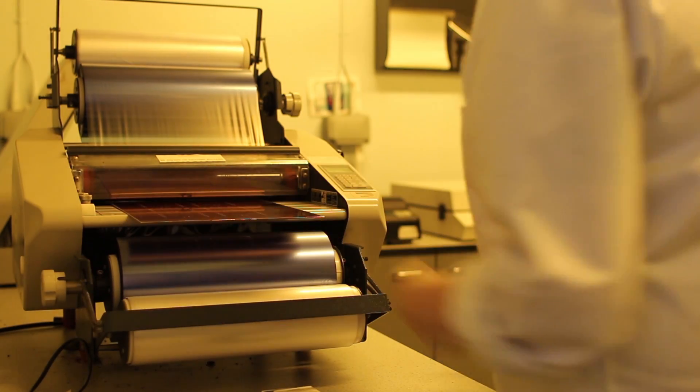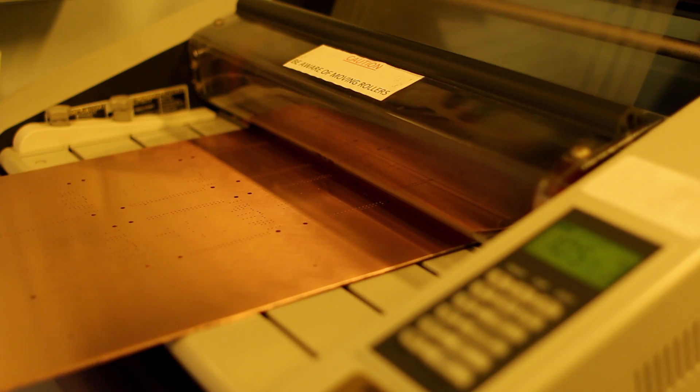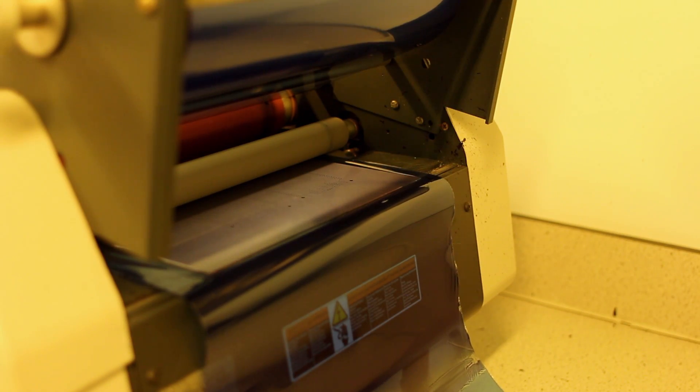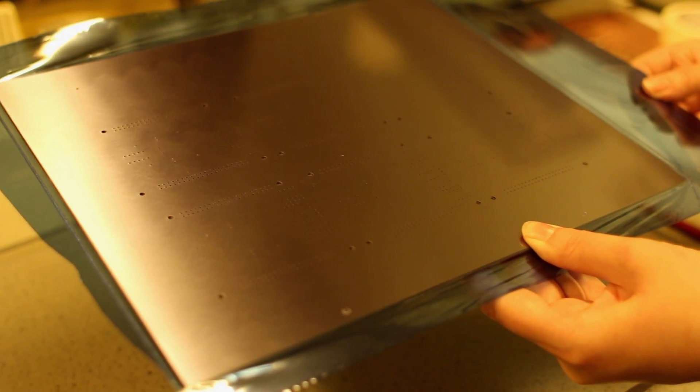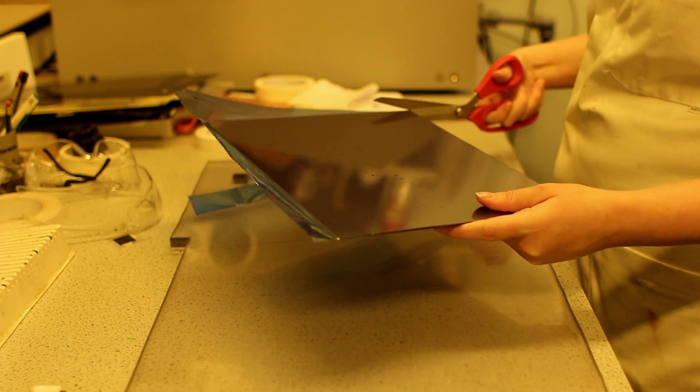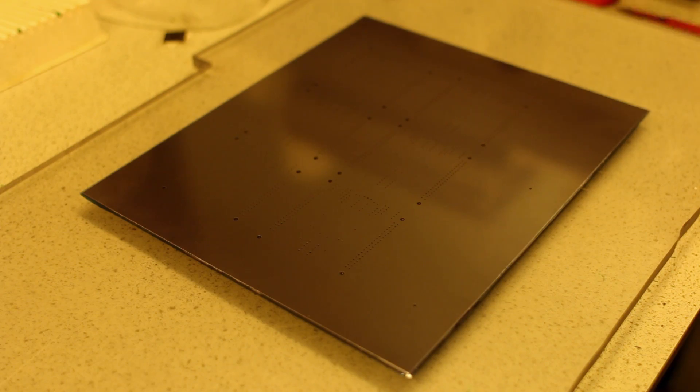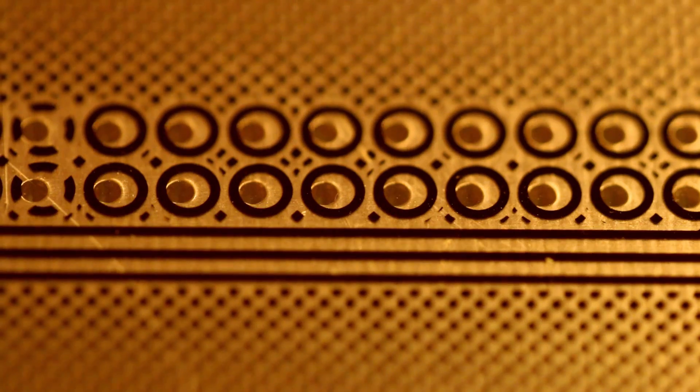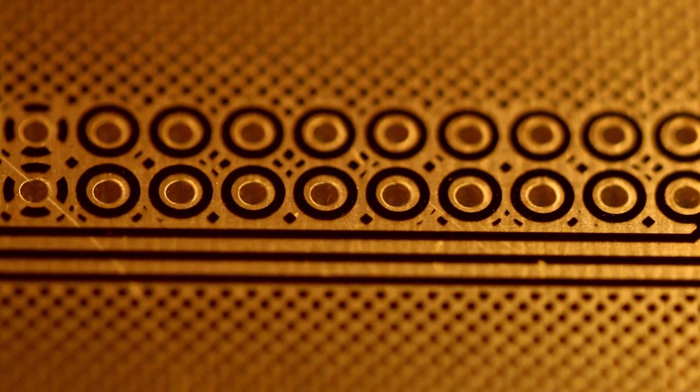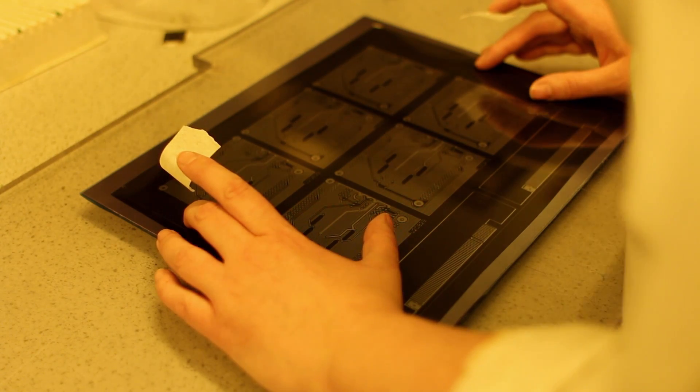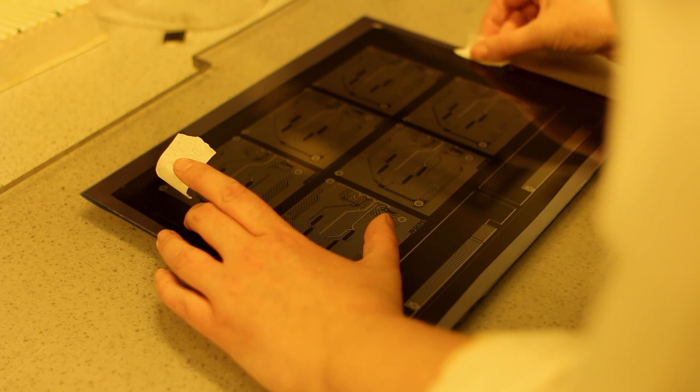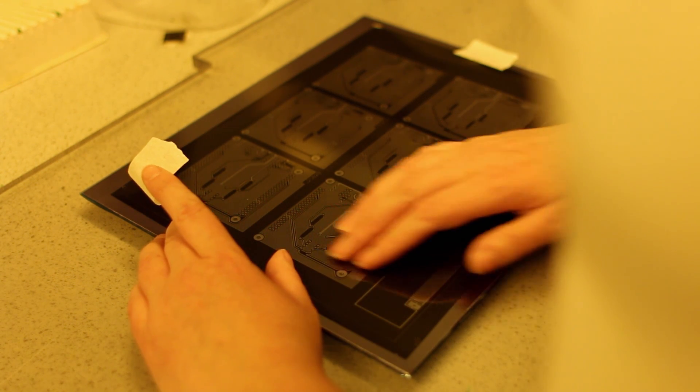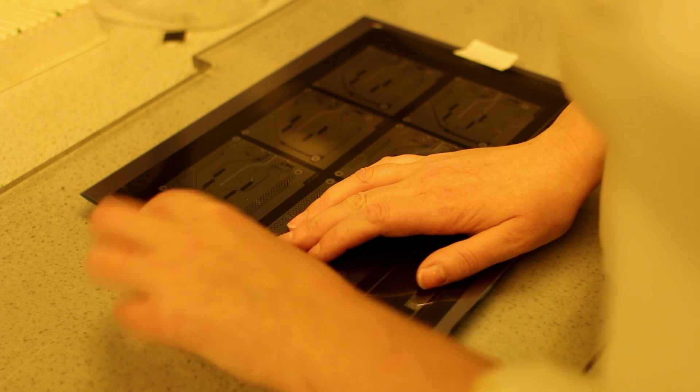The plated board now has photoresist film applied in a laminating machine. The photoresist film hardens when exposed to UV light and remains soluble where it's covered by opaque areas of the transparency. The top and bottom photo film masks are applied to the board using the drill holes to accurately align them. If the design has tracks and pads beneath the minimum size and clearances, aligning the transparency becomes unreliable.